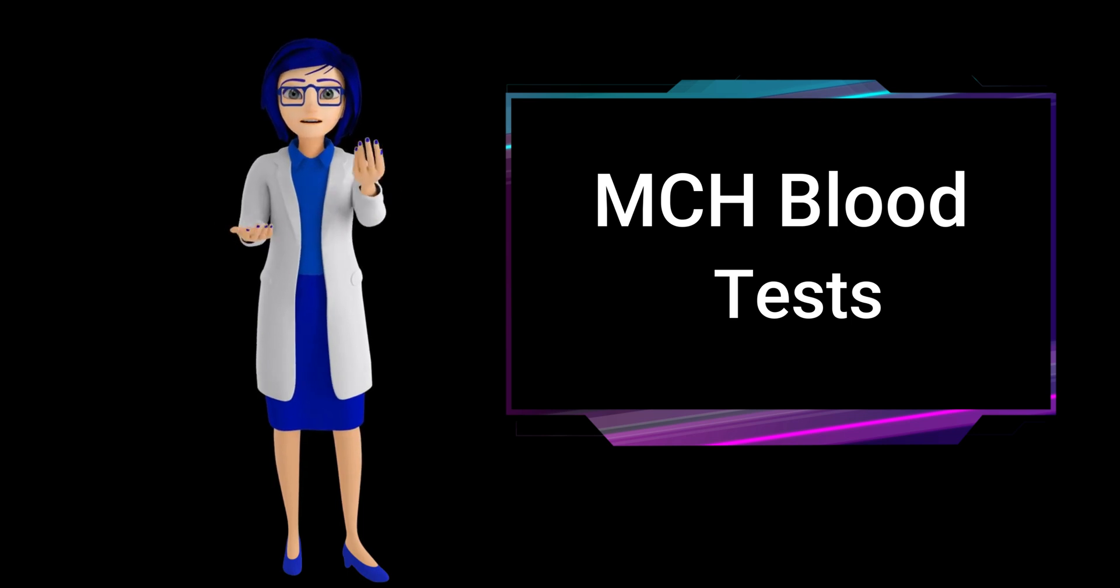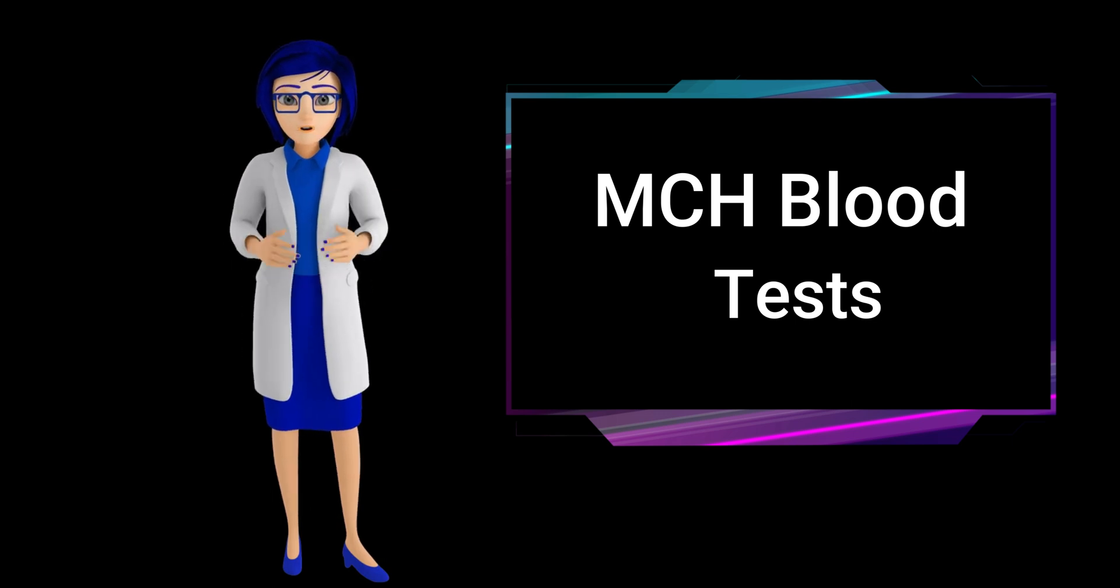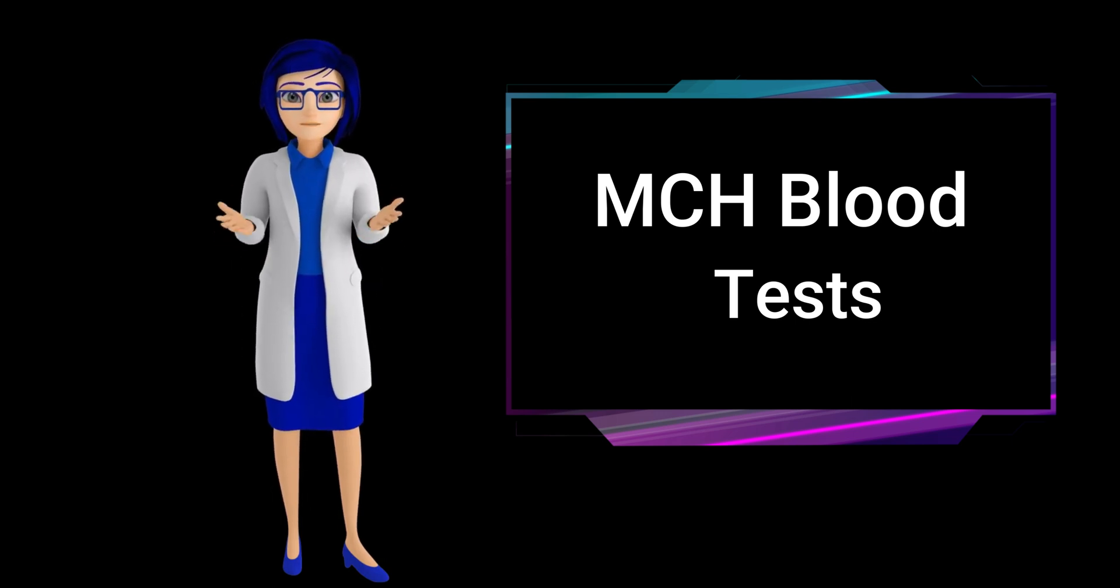A high MCH (hyperchromia) can be a sign of conditions such as megaloblastic anemia caused by a deficiency of vitamin B12 or folate. A low MCH (hypochromia) can be a sign of conditions such as iron deficiency anemia, which is caused by iron deficiency.